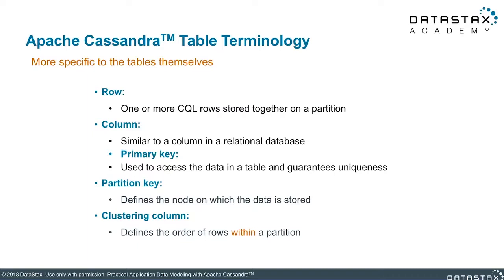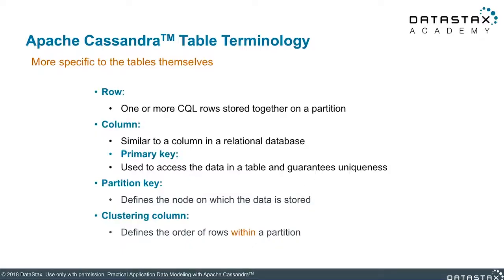A row of data is a pretty normal concept in databases, but this is what stores all the columns. A row is contained inside of a partition, and that's one of the interesting differences between Cassandra and a relational database. A column is the same as what you would see in a normal relational table; however, we treat columns a little differently. These are the individual items inside of a row.